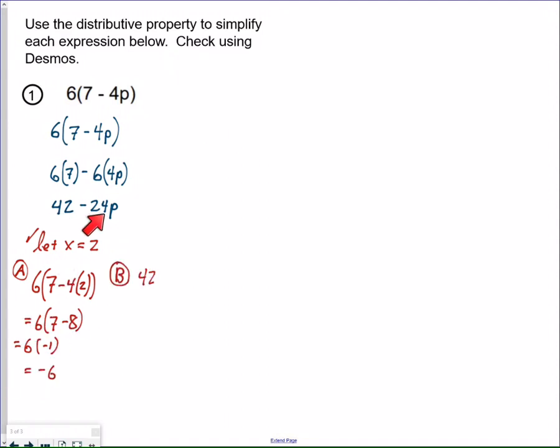Now I take my result, 42 minus 24P, and I put the same value, X equals 2, in for P. When I said X, that's a common mistake. I meant P, let P equal 2, and then we put 2 in for P. And it turns out, oh, I got negative 6 as well, which means that I probably simplified this correctly. But just to make double sure, it's important to go into Desmos.